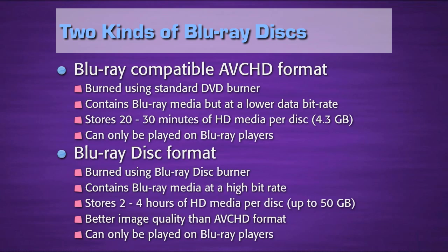There are really two kinds of Blu-ray discs. There's the Blu-ray compatible AVCHD format and the Blu-ray disc format. The AVCHD format is burned using a standard DVD burner like the one you've got inside your Mac. It contains Blu-ray media but at a lower data rate, and it stores only 20 to 30 minutes of HD media per disc because the maximum amount it can hold is 4.3 GB of data.